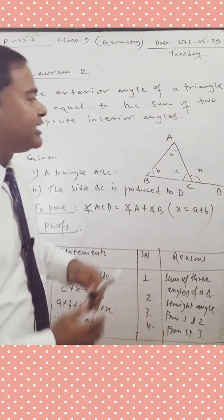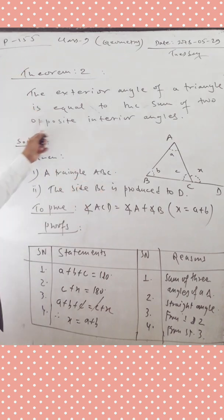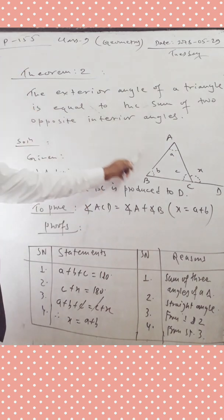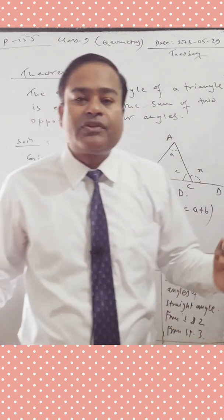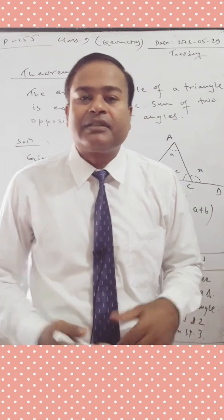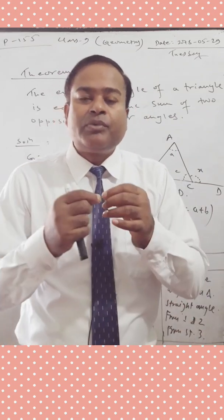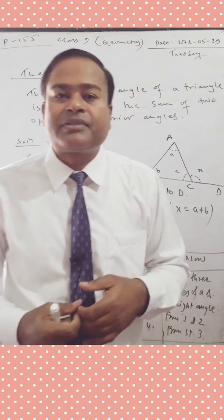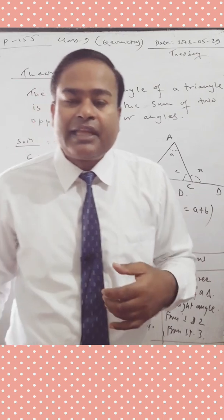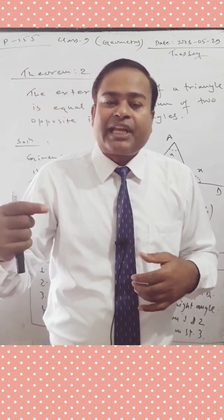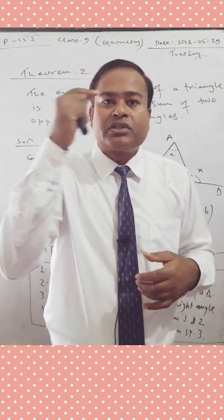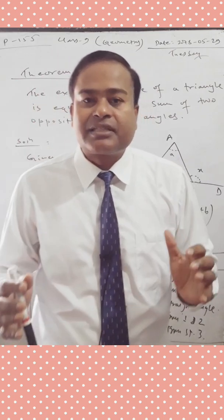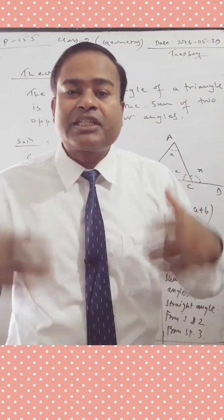This means: if a triangle is given and we produce any one of the sides, an exterior angle is formed. The exterior angle of a triangle is equal to the sum of the two opposite interior angles.